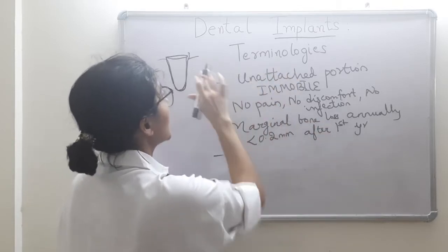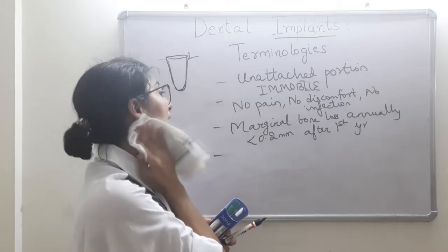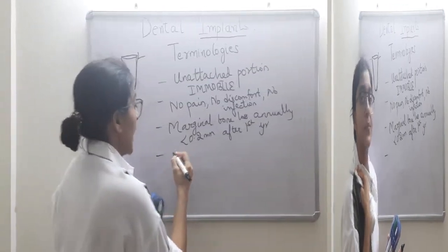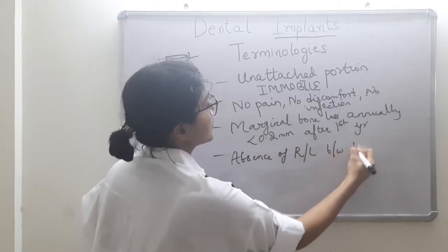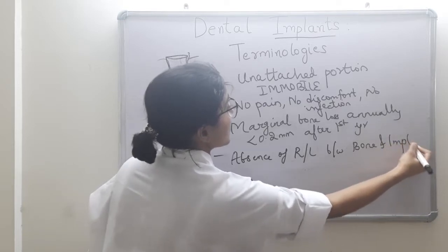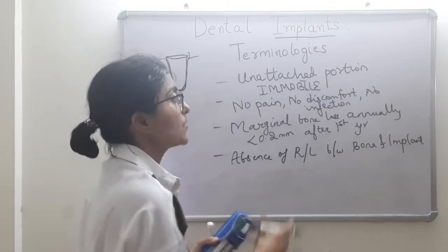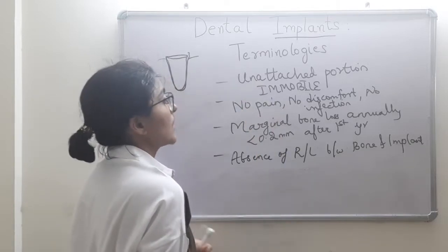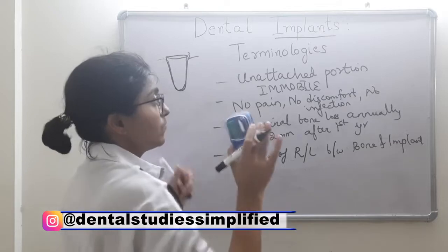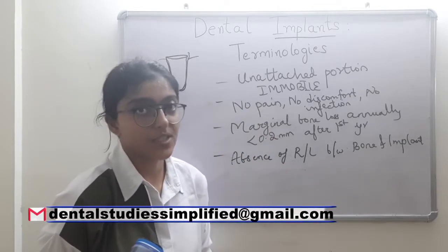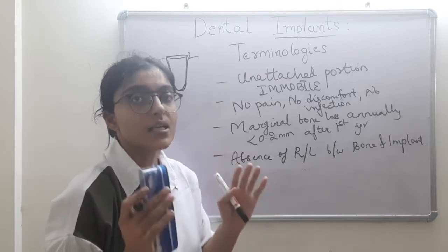Reviewing the criteria: the unattached portion should be immobile; no pain, no discomfort, no infection; marginal bone loss less than 0.2 mm annually after one year. The fourth criterion: absence of any radiolucency between the bone and implant — meaning bone and implant should be in direct contact. These are the four criteria by Albrektsson and colleagues to define a successful implant.